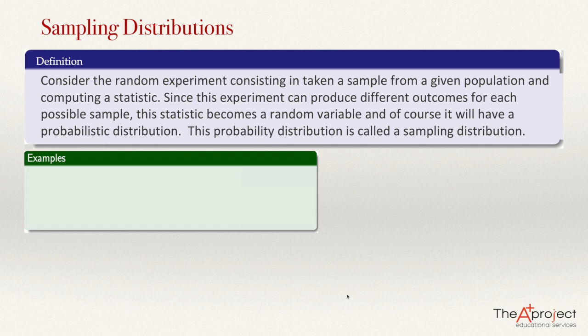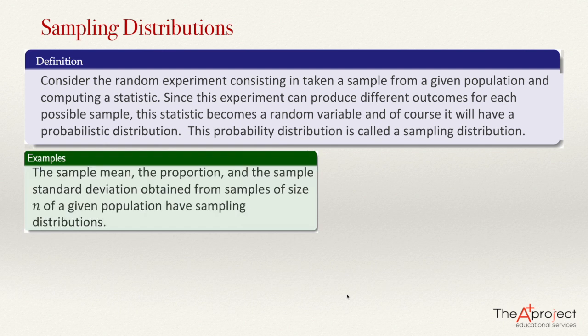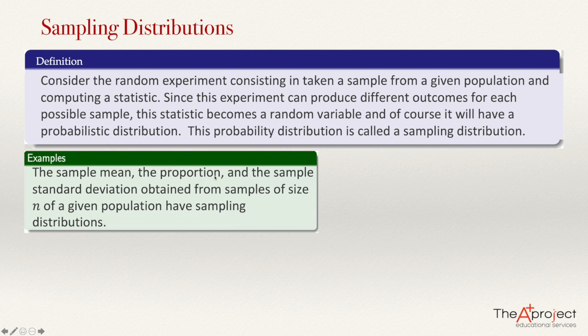For example, you can compute the sample mean of this sample. So you have a population, you compute the sample mean. The sample mean will be a statistic. For each possible sample, you are going to have different results, so this sample mean is a random variable, and we will have a probability distribution. Another example could be the proportion — you can compute the proportion of a sample, and this proportion will be a random variable with a probability distribution. And the same with the sample standard deviation, or whatever statistic that can be obtained from a sample.